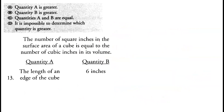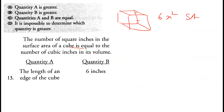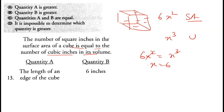For a cube, surface area = 6x² and volume = x³. Setting surface area equal to volume: 6x² = x³, so x = 6. The length of each side is 6, meaning the surface area numerically equals the volume. Both quantities are equal, so option C is correct.